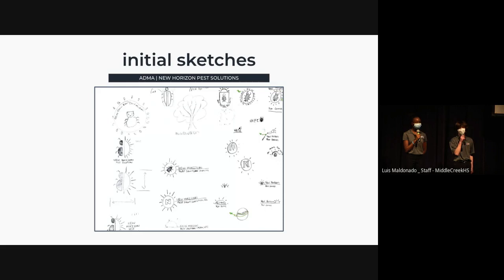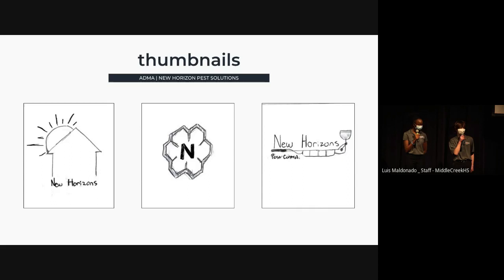We then sent them off to Mr. Hood for him to figure out which ones would become thumbnail sketches. We then created our thumbnail sketches, which had to be refined and polished as they had a chance to become the final design. For my first design, I included sun and bug themes — a sun rising over the side of a home to represent the New Horizons aspect of the name. For my second design, I included a honeycomb, which represents insects like bees without inciting negative connotations. And for my third design, I included tools that might be commonly used by pest control companies.